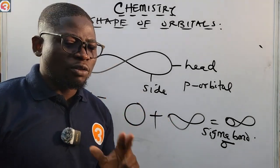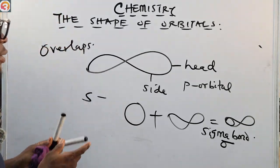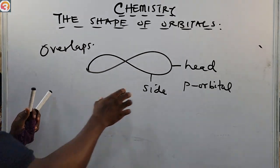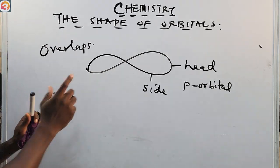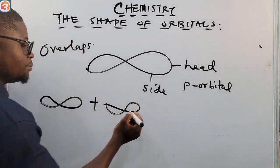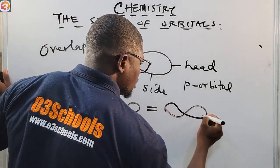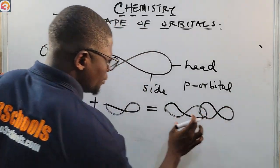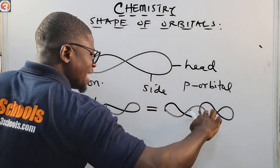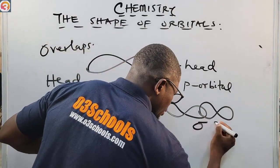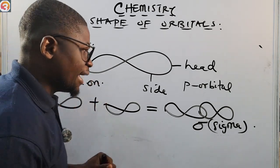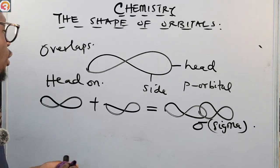A sigma bond can also be formed when two P orbitals overlap head-on. The head of one P orbital overlaps with the head of another P orbital. When two P orbitals overlap head-on, it leads to the formation of a sigma bond. Take note of that.